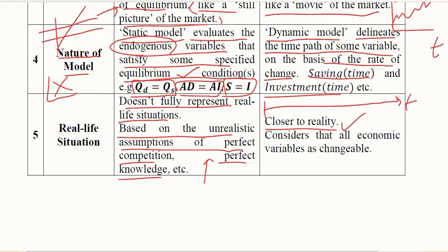Dynamic analysis also considers that all economic variables are changeable. Other variables usually held constant — like information, knowledge, or level of competition — can also be allowed to change because time can change most things, including the level of knowledge or competition. This makes dynamic analysis more realistic, as it includes many variables kept constant as assumptions in static and comparative static analyses.